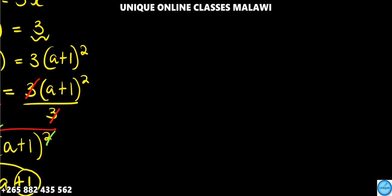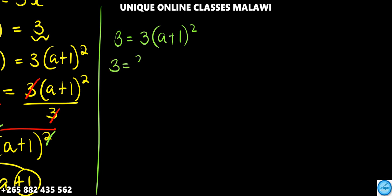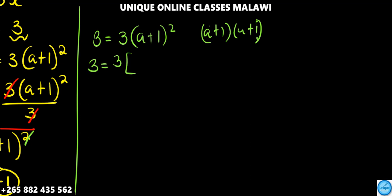Alternatively, we have 3 is equal to 3 times open bracket a plus 1 then squared. After expanding, it will be a squared plus 2a plus 1.